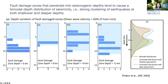Fault damage zones also affect where earthquakes happen. Four histograms show hypocenter depth distributions for fault zones terminating at different depths. For very shallow damage zones, earthquakes concentrate near the frictional boundary. As the fault damage zone gets deeper, most earthquakes occur inside the damage zone along the material interface. In some cases we observe a bimodal distribution of seismicity with clustering at both shallower and deeper depths, similar to observations in some California regions.